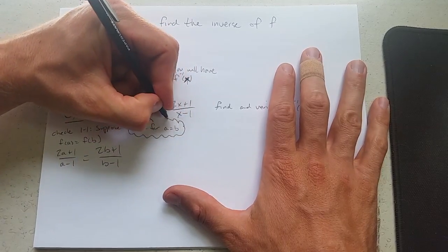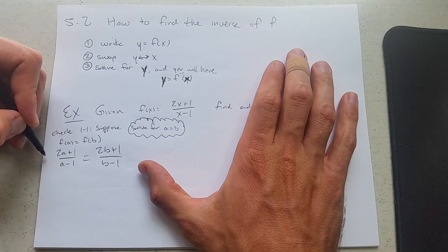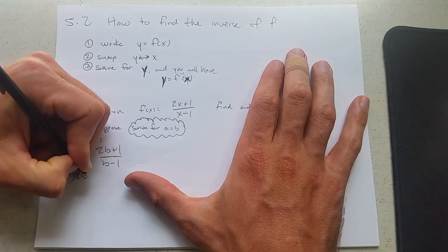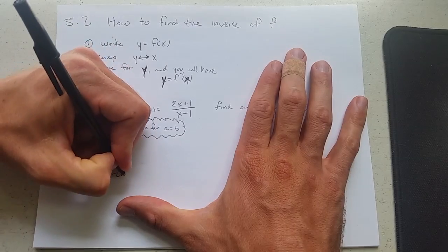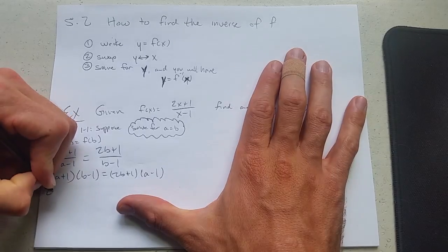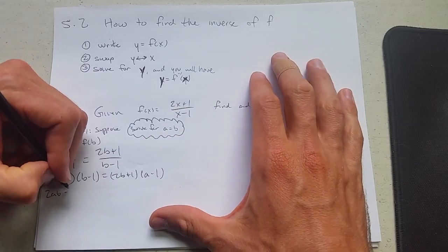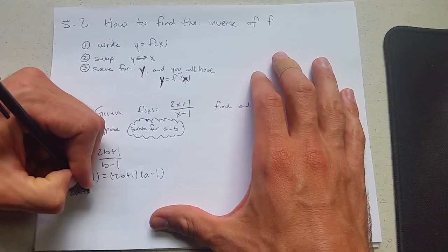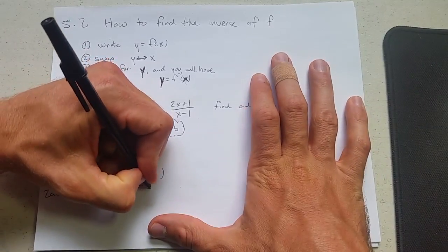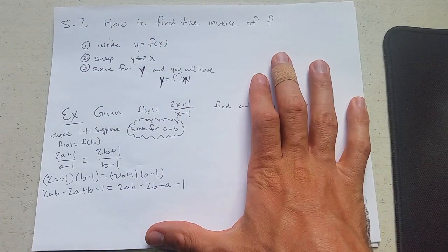So I'm putting this inside of a cloud because this is our goal. So we want to get to solve for a equals b. So step one, fractions suck. We're going to cross multiply by the denominators. Now I'm going to foil both sides, 2ab minus 2a plus b minus one equals 2ab minus 2b plus a minus one.